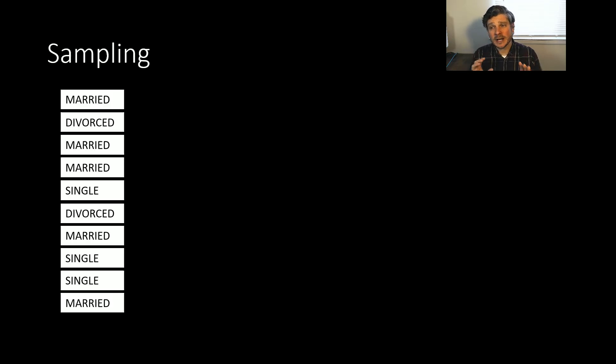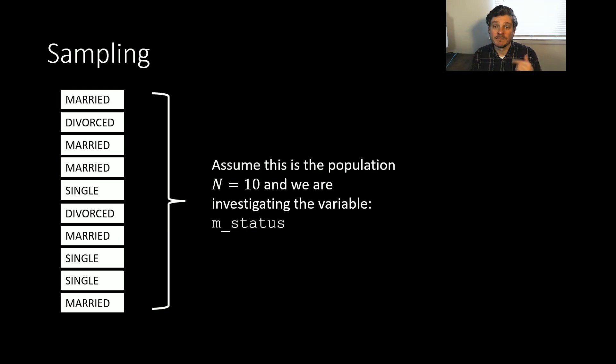So we're going to look at a much smaller scale problem so that we can understand the process in this very small scale so that when we actually do scale it up to tens of thousands of data points, we still have this concept here. So let's assume that this is our population, which is a size of 10, so big N is 10, and we're investigating this variable for marital status or M status.